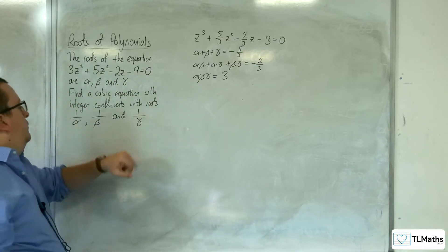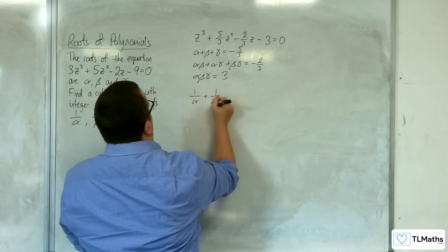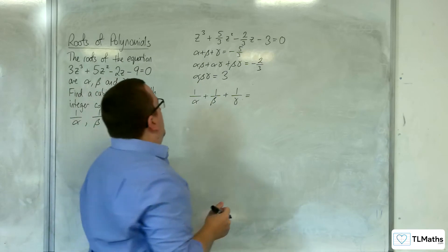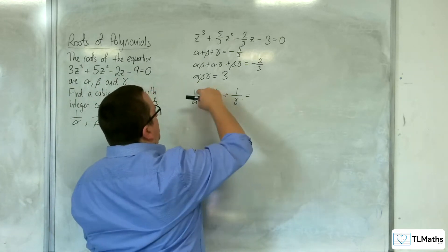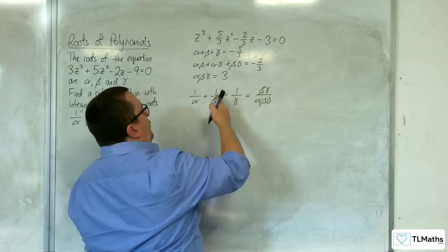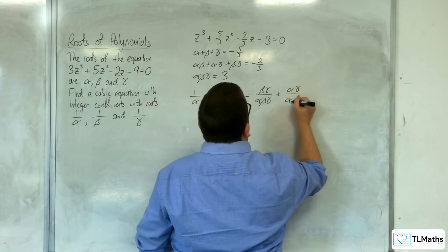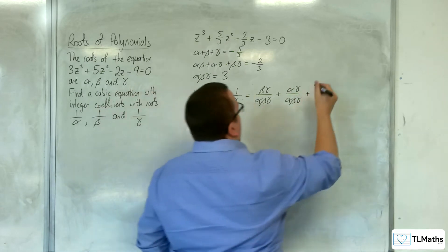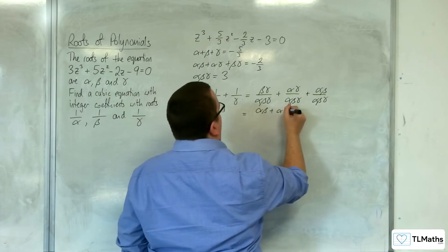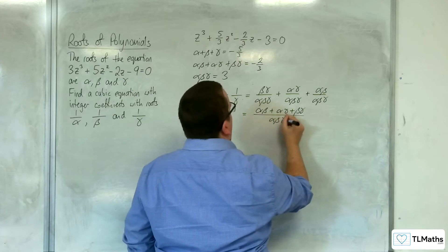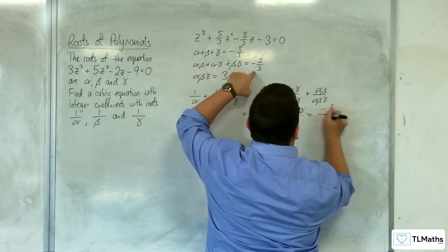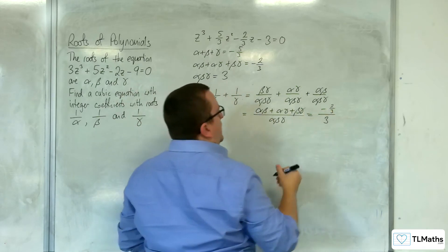Our new sum of roots — 1 over alpha plus 1 over beta plus 1 over gamma — we need to bring this into one fraction. Multiplying each fraction top and bottom to get a common denominator of alpha beta gamma gives us beta gamma plus alpha gamma plus alpha beta over alpha beta gamma, which is alpha beta plus alpha gamma plus beta gamma over alpha beta gamma. This is minus 2 thirds in the numerator divided by 3 in the denominator, so that gives minus 2 ninths.